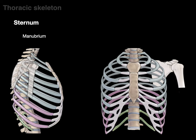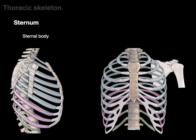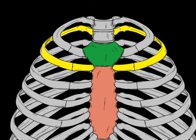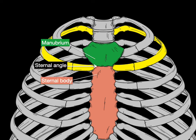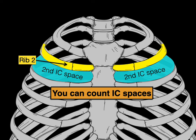The sternum, or breast bone, is where the ribs and costal cartilage attach. The manubrium is the uppermost part of the bone, and on the top of the manubrium there's a little notch called the jugular notch or suprasternal notch. The sternal body is the main part of the sternum where most costal cartilage from the true ribs articulates. The sternal angle is the angle between the manubrium and sternal body — it can be palpated with the fingers, and that's where the second rib attaches, allowing you to count intercostal spaces.